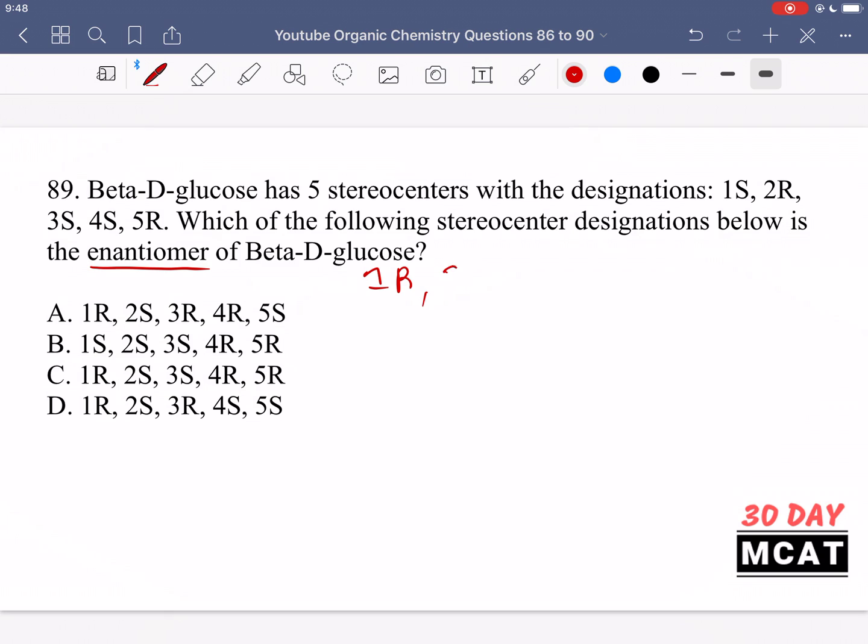So 1 becomes R, 2 instead of R it becomes S, 3 is R, 4 is also R, and finally 5 is S. That matches up with option 1. And the other options are incorrect because they are giving us diastereomers. They're not flipping the stereochemistry at every stereo center.